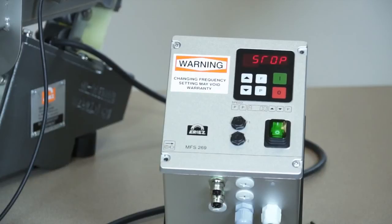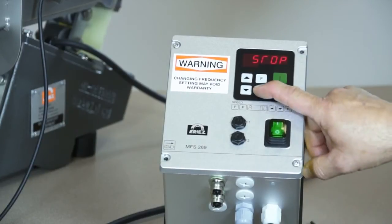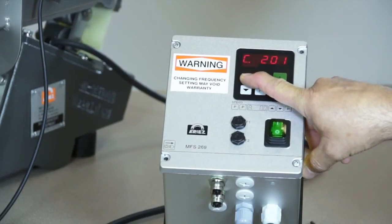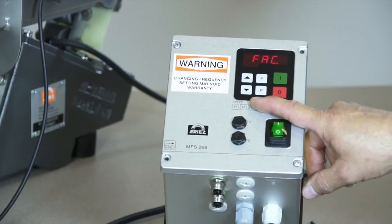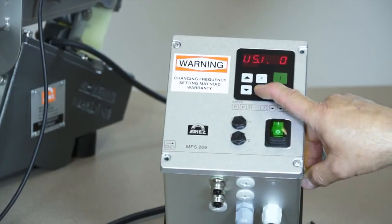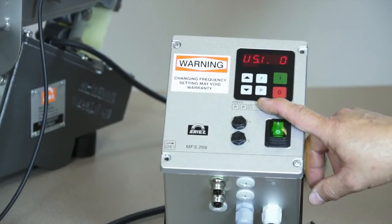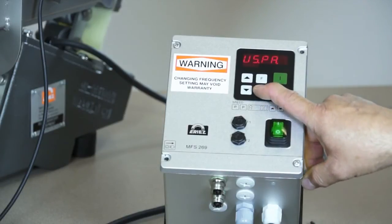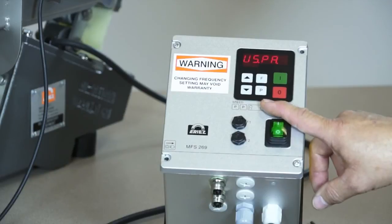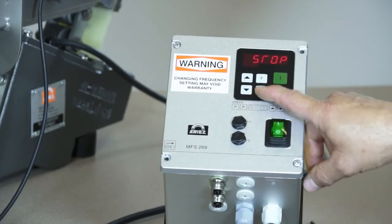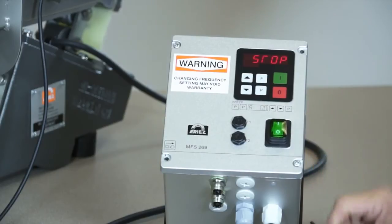If it is necessary to return the parameter values to the factory settings, press P, go to code 210, press P, FAC is displayed. Press P, US10, this is where the Erie's factory settings are stored. Press P, USPR, up arrow, safe will flash, then press P. We're back to factory settings.